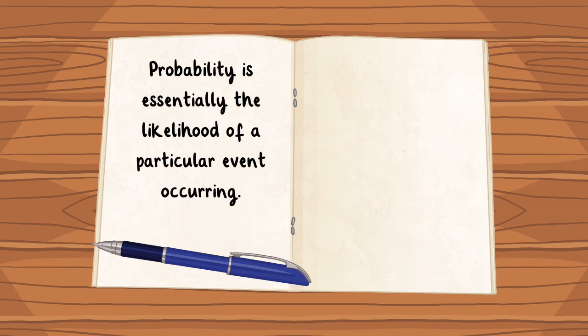Probability is essentially the likelihood of a particular event occurring. We can work out numerical probabilities other than zero, one over two, or one by looking at possible outcomes.